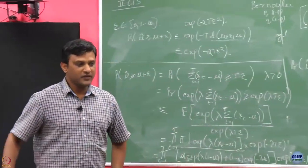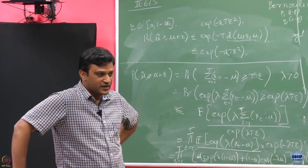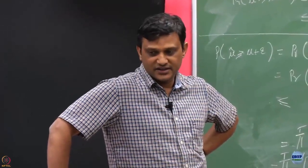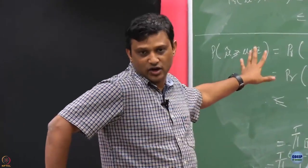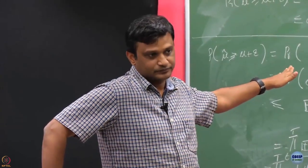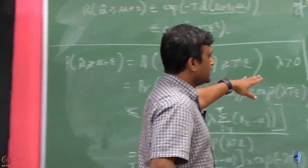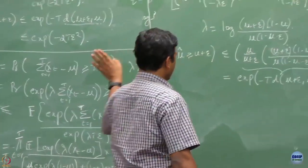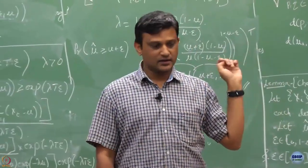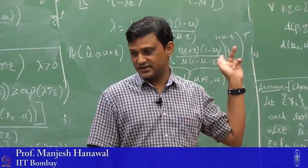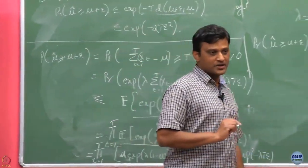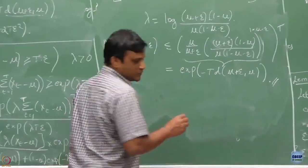I want to stop this discussion about KL-UCB here. What we have discussed is: we gave the algorithm and explained that it is based on tighter concentration bounds. These tighter bounds arise because we are restricted to Bernoulli distributions. Once we have this bound, the expected number of pulls upper bound comes in terms of the KL divergence, giving a tighter result than UCB.